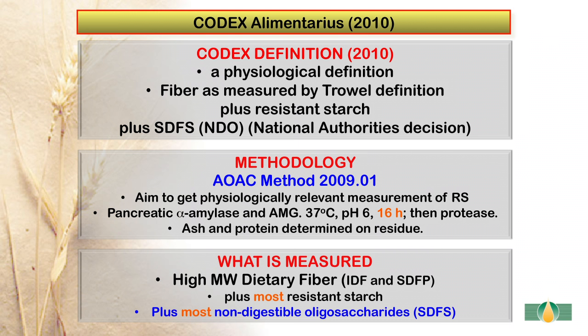So, what is measured in this method? High molecular weight dietary fibre, including insoluble dietary fibre and soluble dietary fibre that precipitates in 78% alcohol, plus most of the resistant starch, plus most of the non-digestible oligosaccharides, or soluble dietary fibre that is soluble in 78% alcohol.